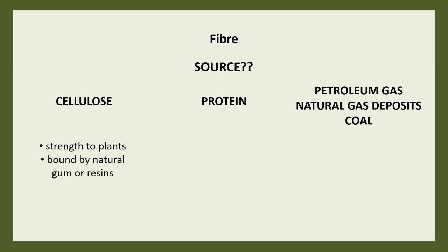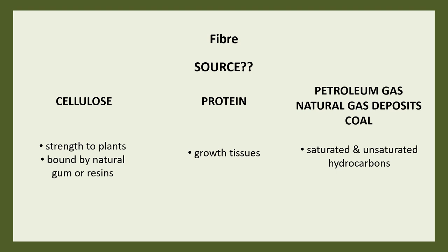Cellulose fibers are found in various parts of the plants, providing them strength. The protein fibers are found in the growing tissues of plants and animals. In the case of petroleum, natural gas, and coal, they yield different saturated and unsaturated hydrocarbons which serve as the major raw material for the production of synthetic fibers.